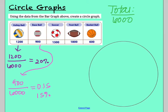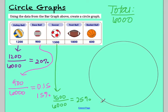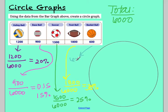For soccer: 1,500 divided by 6,000 equals 0.25, or 25 percent. For football — that's the biggest category — 1,800 divided by 6,000 equals 0.3, which is 30 percent. And lastly, basketball: 600 divided by 6,000 equals 10 percent.